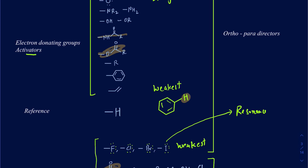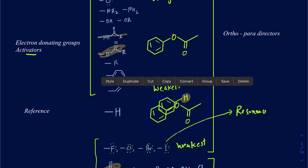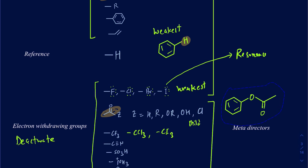You can have ester groups appearing in both categories, and what makes them a meta-director or electron withdrawing versus electron donating is the way they are attached to the ring. If you have a ring with the oxygen of the ester group attached directly to it, that makes it an electron donating group — an ortho and para-director. The same applies to the amide: if the nitrogen of the amide is attached directly to the ring, it's an electron donating group. But if the carbonyl carbon is directly attached to the ring, that makes it an electron withdrawing group.